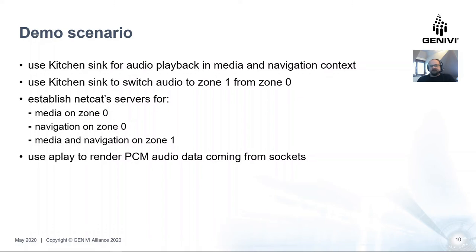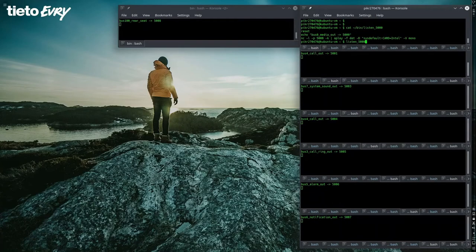Here is the scenario I would like you to see. We will use KitchenSync for playback because it allows us to easily play audio data in various contexts and also enables us to change the zone from one to another. For the Linux part we will use aplay to play and show the volume meters together with the netcat utility to act as a TCP server. Here is the virtual machine desktop — we have the servers, some of them already working. The netcat utility is listening on port 5000 and passing data to aplay.